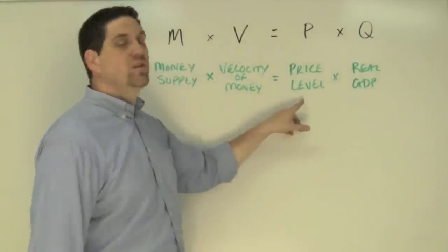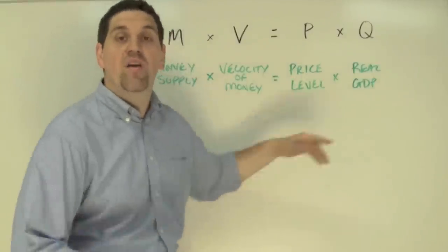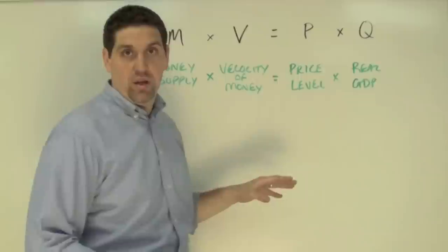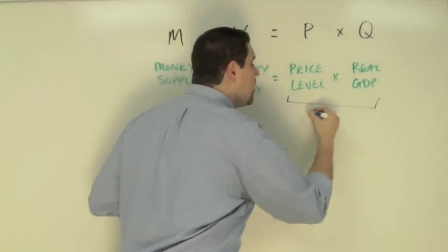When you multiply those together, that equals the price level in economies times the real output or real GDP of goods and services produced in that country. Now notice, when you multiply price level times real GDP, this gives you the nominal GDP.